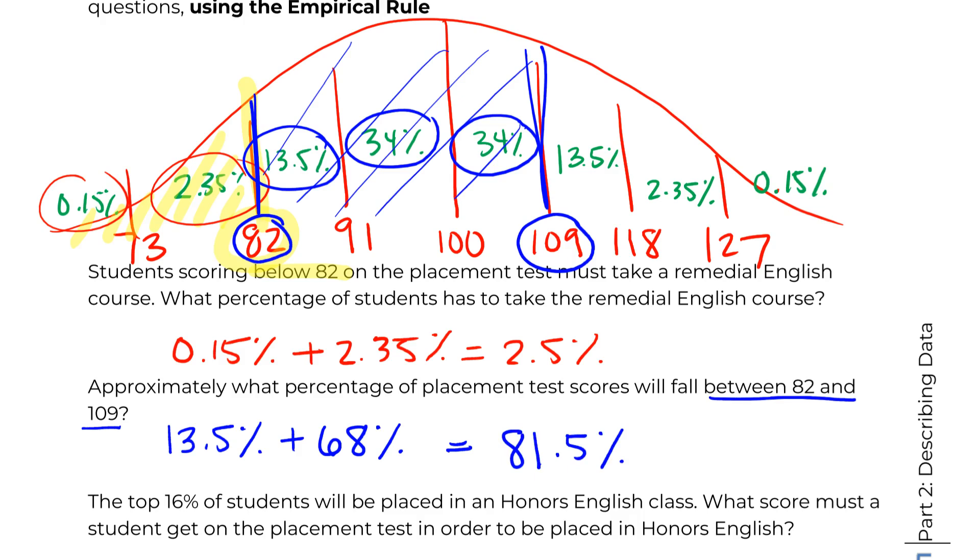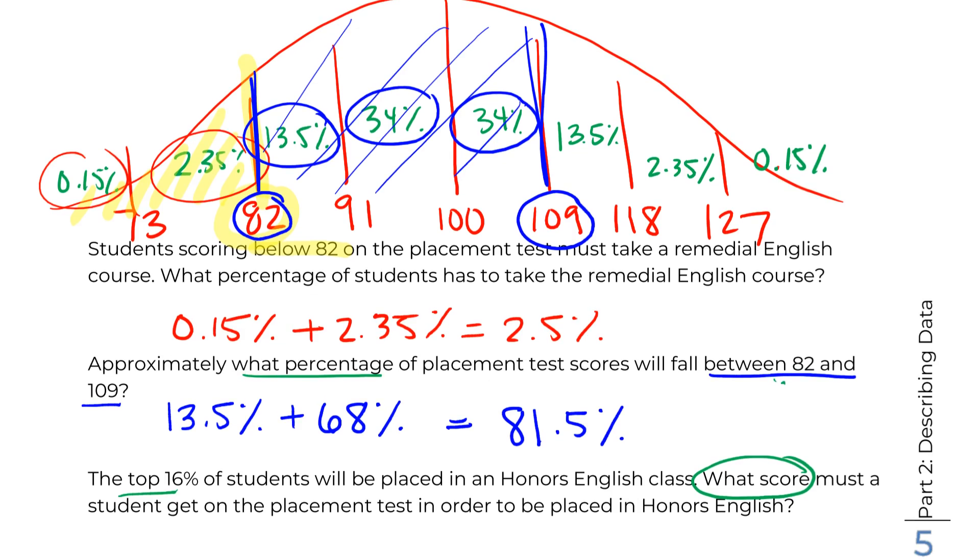And now the last thing I could do is ask sort of the other direction for this type of problem. So if you look at the last question, the top 16% are placed in Honors English, what score must a student get on the test to be placed in Honors English? So now we want a score and we have a percent as opposed to the other questions where we had scores and then we wanted to get a percent, right? So this is working in the other direction. So top 16 tells me this is a student who did really well, right? So you can just sort of guess and check your way to the answer.